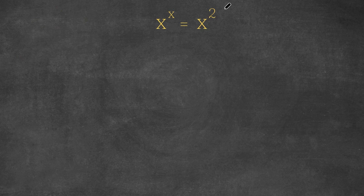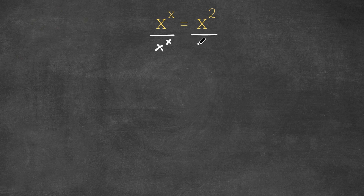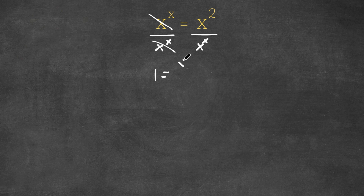What I'm first going to do is divide both sides by x to the power of x. So now I have x to the power of x divided by x to the power of x is equal to x squared divided by x to the power of x. Now x to the power of x and x to the power of x, these two cancel out. So now I have 1 is equal to x squared divided by x to the power of x.